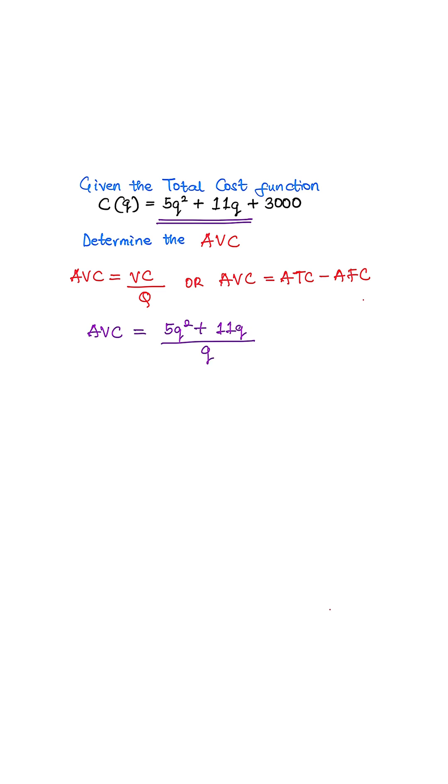So this is our average variable cost function, or we can simplify further. That means we have 5q squared divided by q plus 11q divided by q.